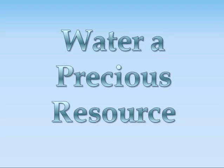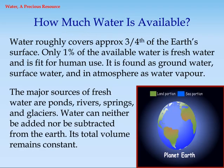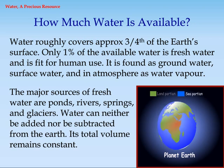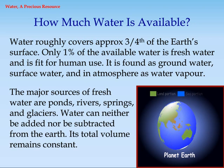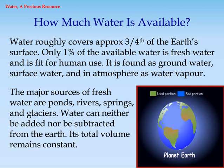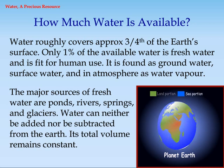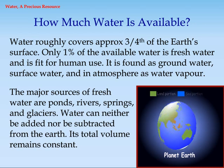Water: a precious resource. How much water is available? Water roughly covers approximately three-fourths of the earth's surface. Only 1% of the available water is fresh water and is for human use. It is found as ground water, surface water, and in the atmosphere as water vapor.